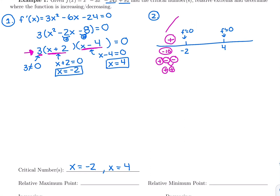My next interval is between negative 2 and 4. I'll plug in 0, which is easy. The first factor 3 is positive. 0 plus 2 is positive. 0 minus 4 is negative. Two positives times a negative gives a negative derivative, which means the original function is decreasing on this interval.